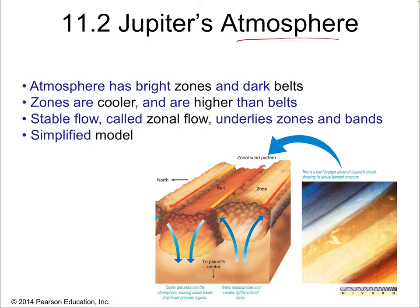The atmosphere has bright zones and dark belts. Zones are cooler, higher, and more reflective. The stable underlying flow — called zonal flow — is what causes the zone and belt pattern. Zones are higher in elevation than the belts, and they go in alternating directions. This is the zonal wind pattern, which runs east-west, perpendicular to north-south. The planet's center is further down, so as we lose elevation we move toward the interior.